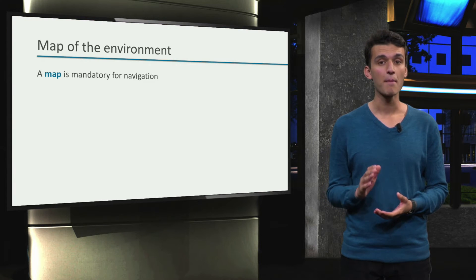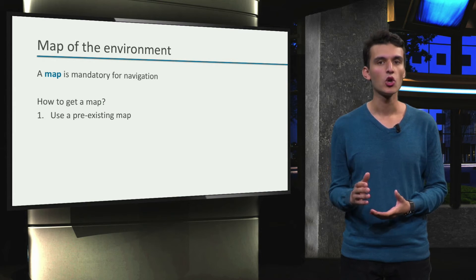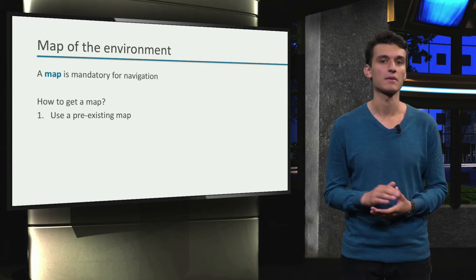As we have seen, a map is absolutely mandatory to navigation. But how do we get a map? In some cases, we can just use a pre-existing map.